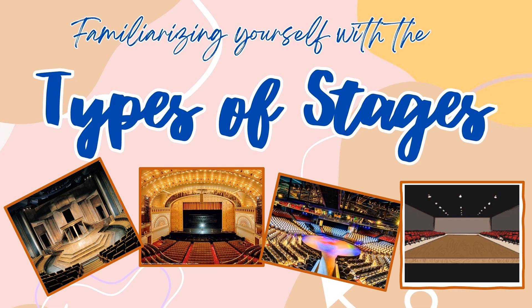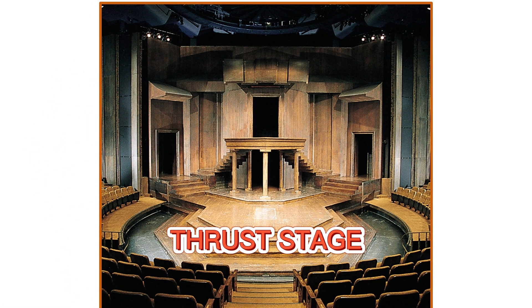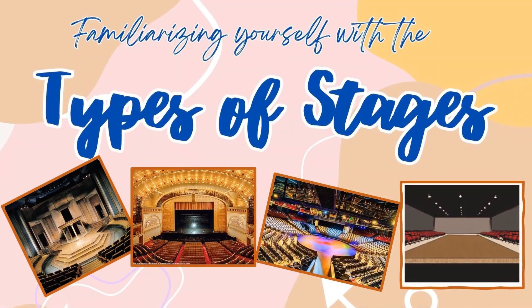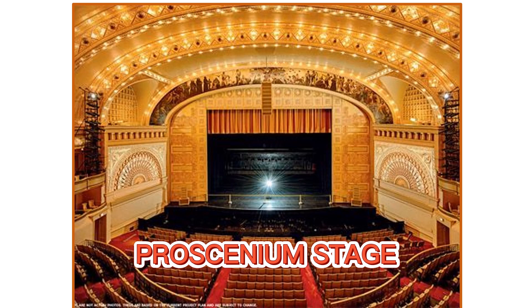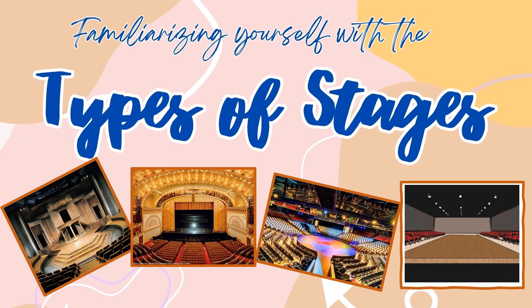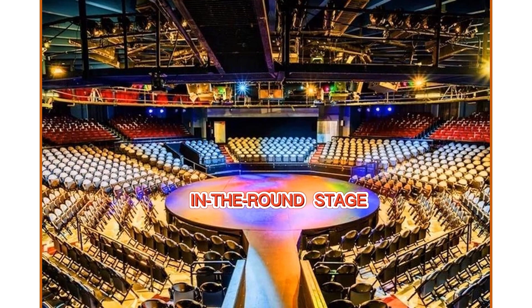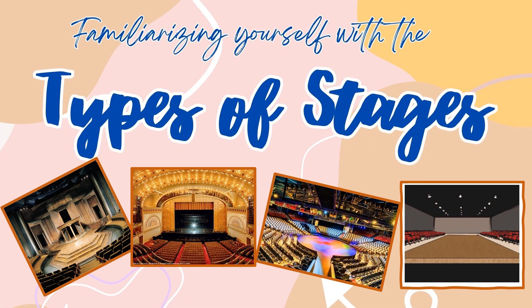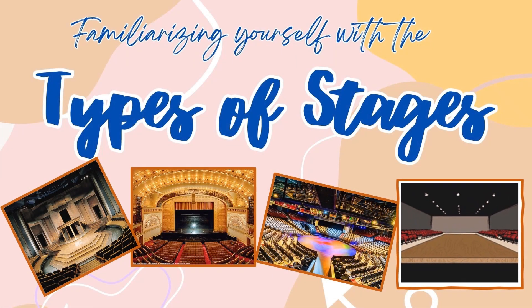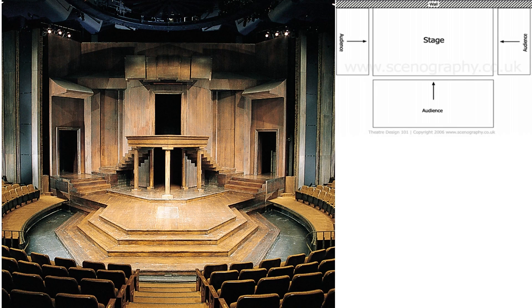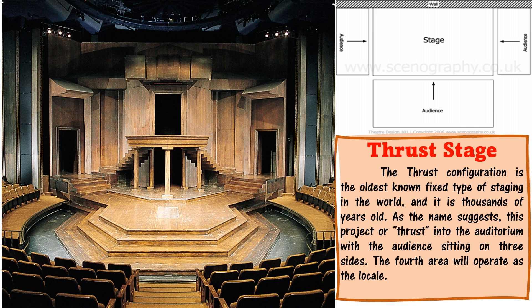Familiarizing yourself with the types of stages. The first type is the thrust stage. The thrust configuration is the oldest known fixed type of staging in the world, and it is thousands of years old. As the name suggests, this stage projects or thrusts into the auditorium with the audience sitting on three sides.